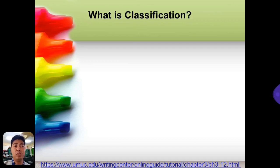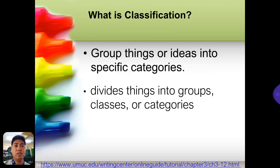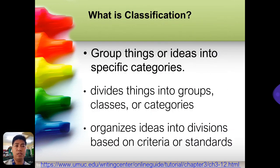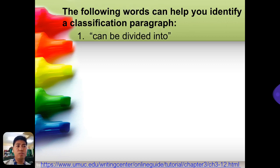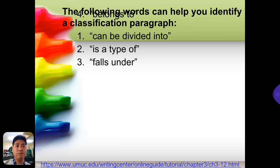What is classification? When we say classification, we group things or ideas into specific categories, or we divide things into groups, classes, or categories. We can also organize ideas into different divisions based on the criteria or standard. How can we identify a paragraph as a classification paragraph?